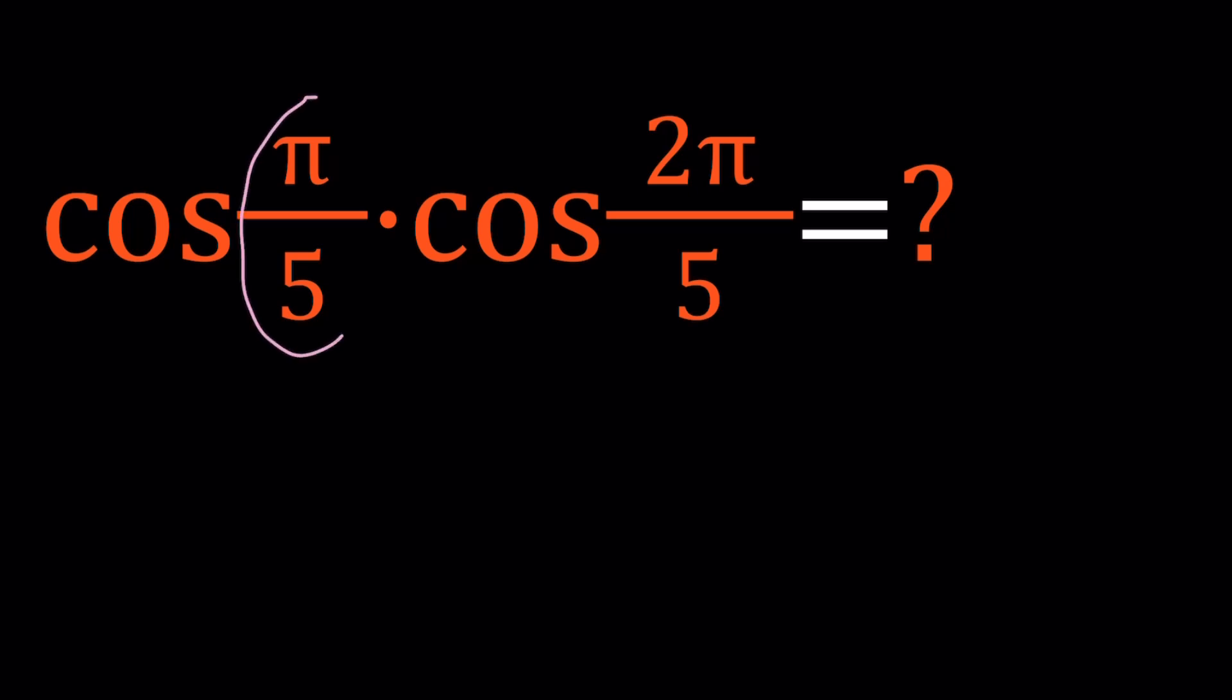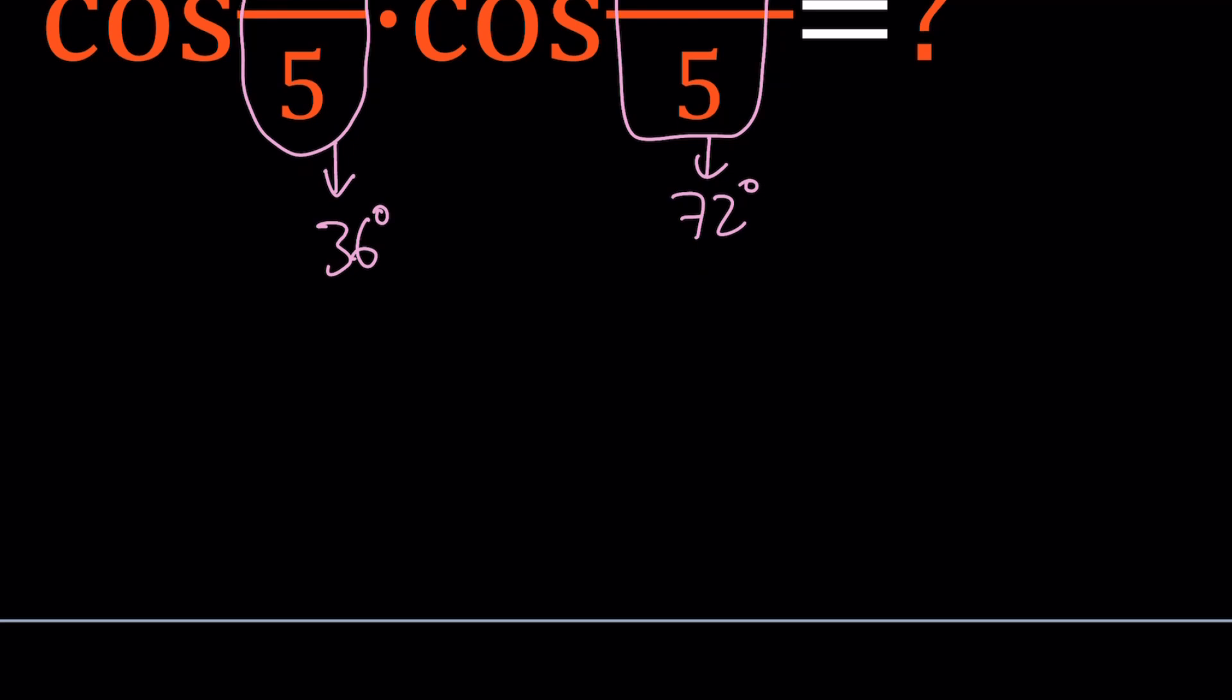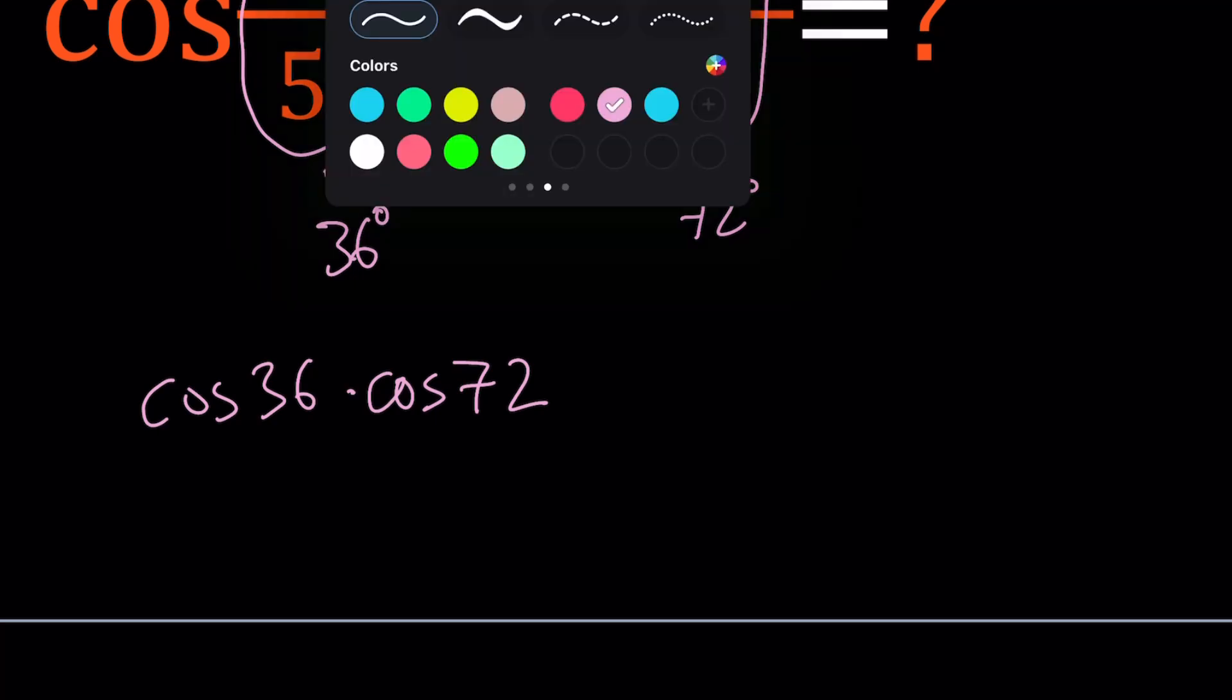Pi represents 180 degrees, therefore in degrees this is going to be 36 degrees and this is going to be 72 degrees. I don't like writing the degree symbol, so from now on I'm not going to be writing the degree symbol, but all the angles will be in degrees. So we're going to evaluate cosine 36 times cosine 72. And I'll be presenting two methods, and let's start with the first one.